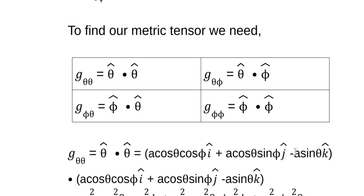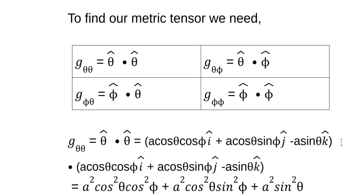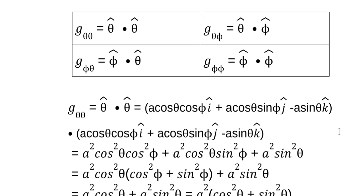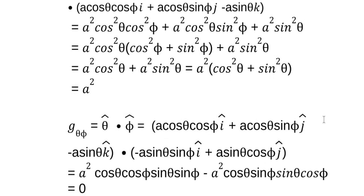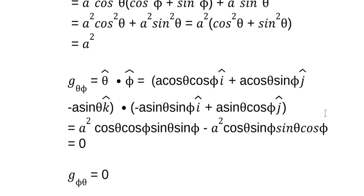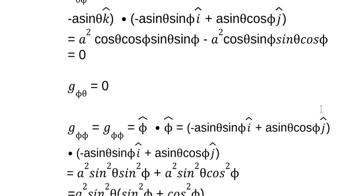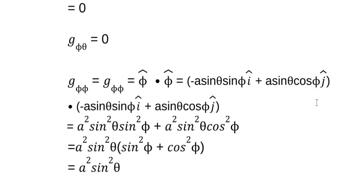Normally when you multiply this times that you would have nine terms, but since this is orthonormal, only the i·i, j·j, and k·k terms are left — the i·j, as an example, is zero; i·i is one. So it actually does have nine terms but six of them are zero. We plug in what we need, do the dot products, and we wind up with one component: a squared. We do another and we get zero. Since the tensor is symmetric about the diagonal, the off-diagonal component is also zero. We do our last one, phi-phi, and we get a² sin²θ. So we've got our metric tensor.